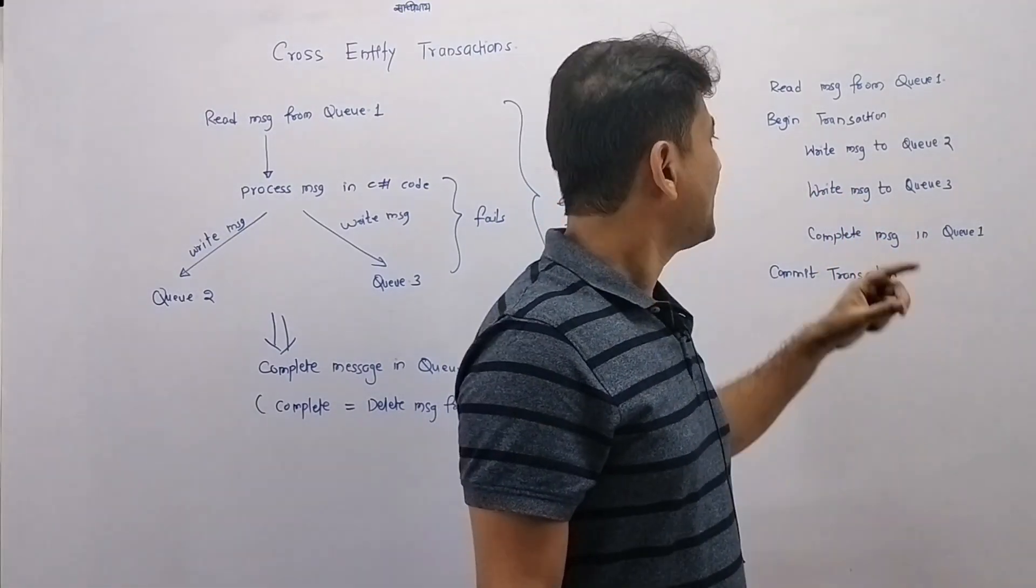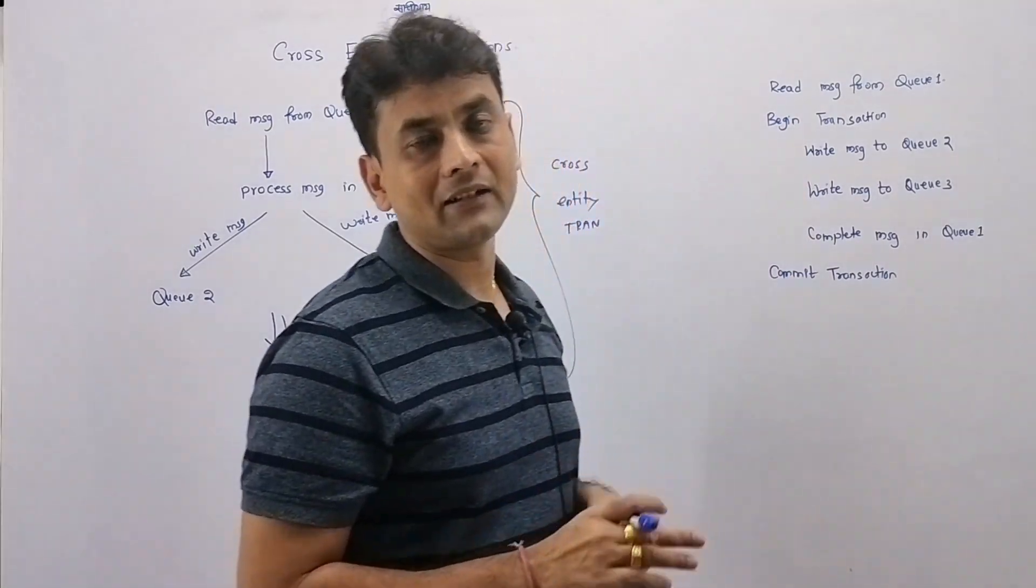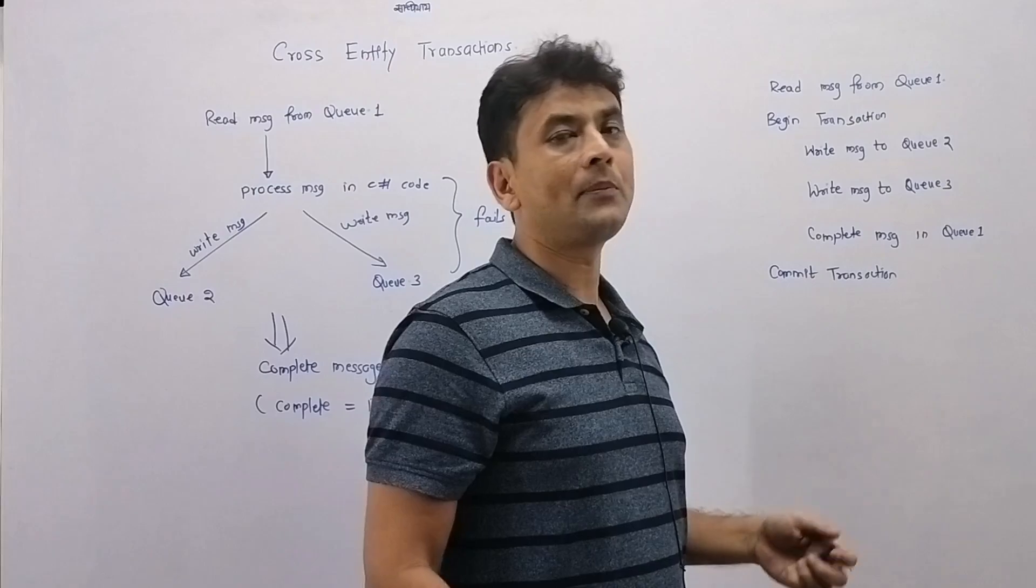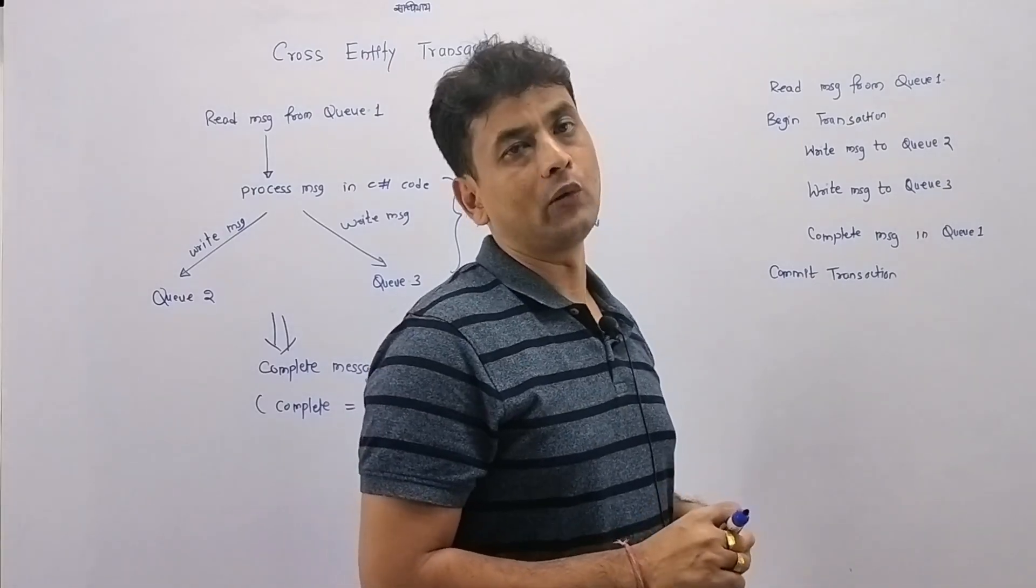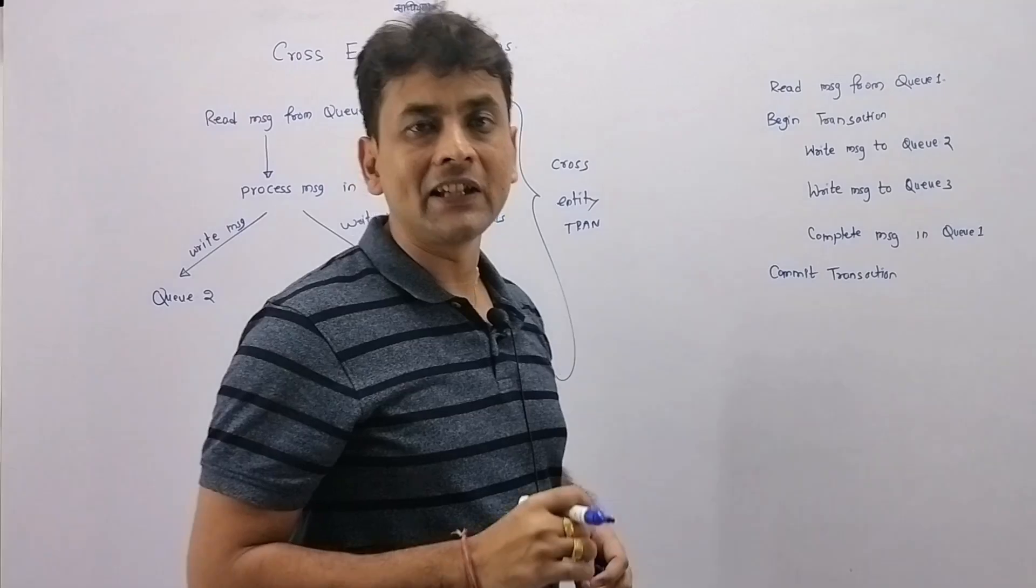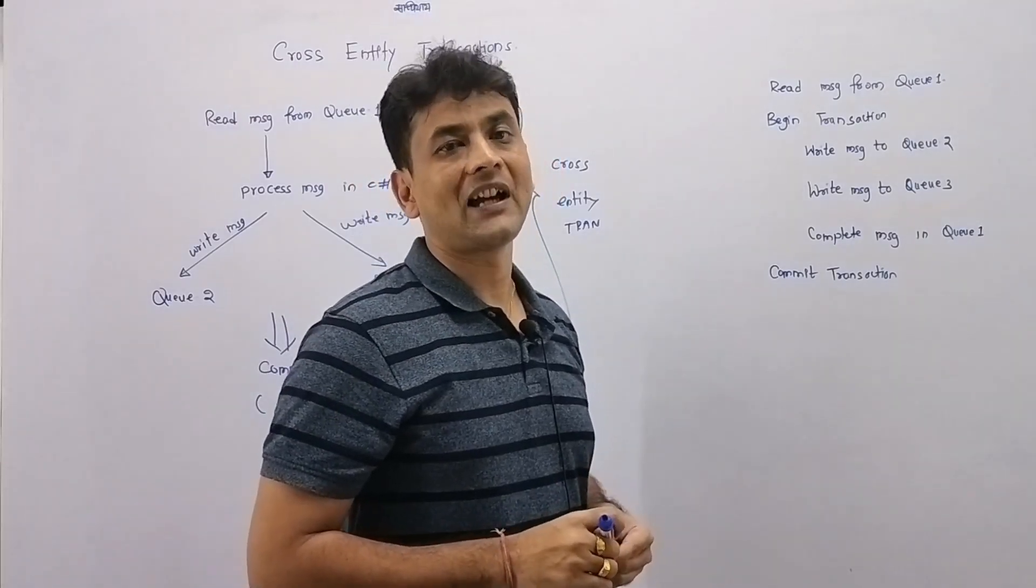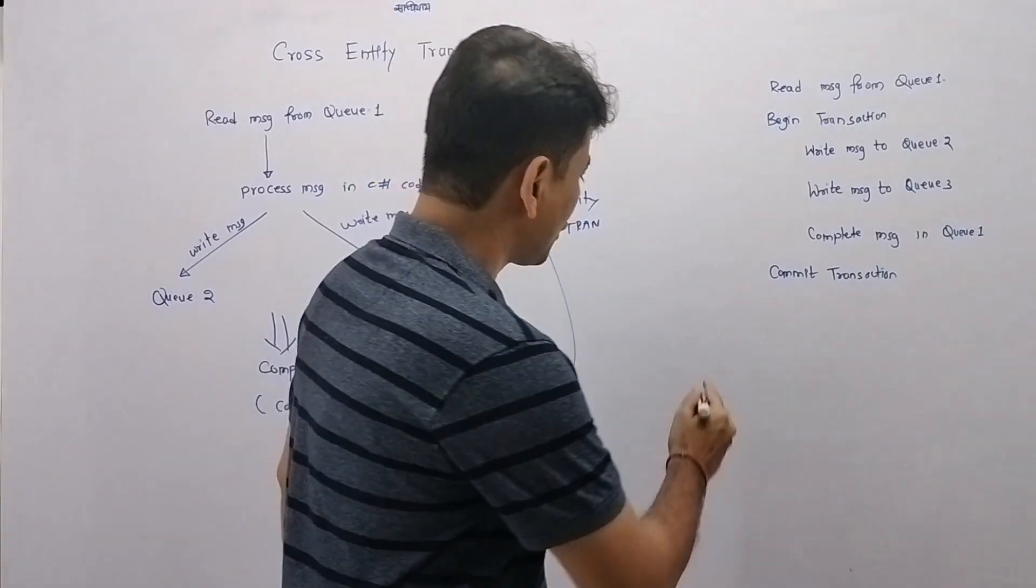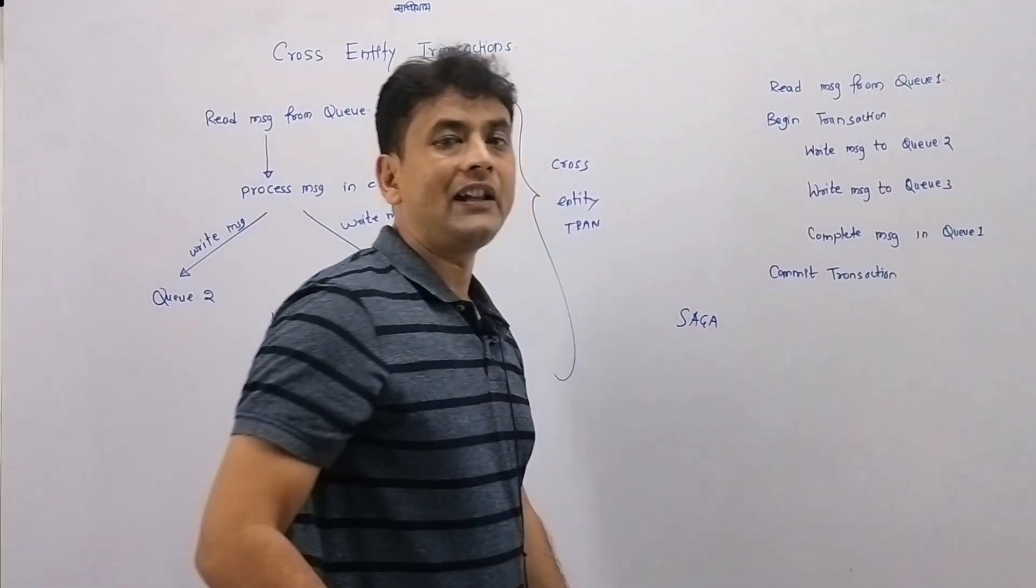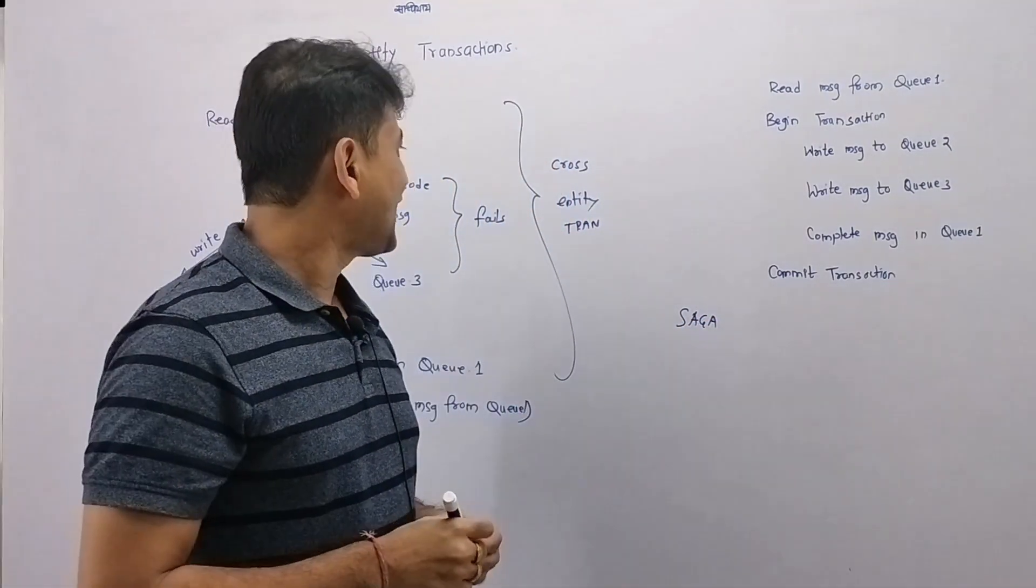If somewhere this process fails, we will roll back that transaction. That means that message will not be deleted from Queue 1. And what we have discussed so far, it's nothing but a baby version of saga pattern for distributed transactions.